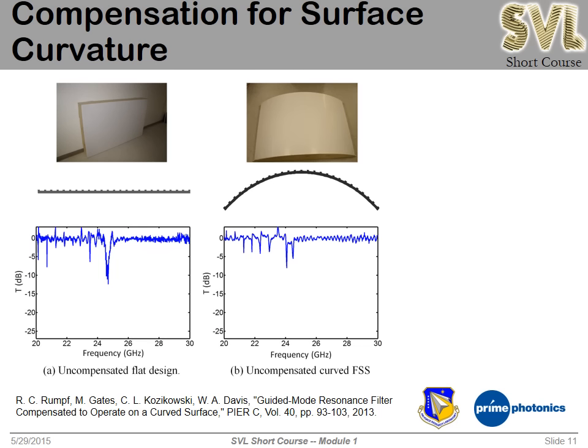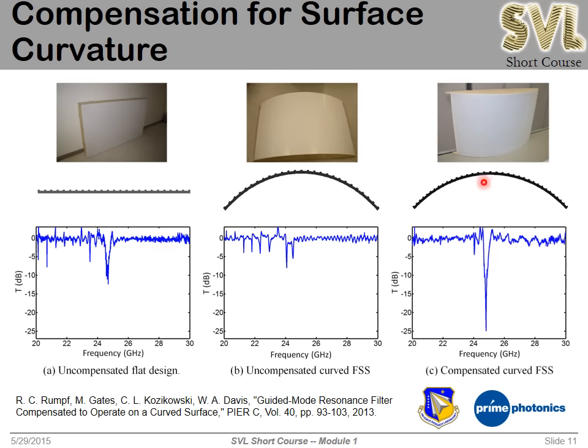What we can do to compensate is adjust the period of the grating over the curve to keep it resonant at the same frequency the entire time. Here's a picture and photograph of the actual device, and we got a very strong resonance — in fact stronger than the flat design. The reason it was stronger is that while compensating for curvature of the device, we also compensated for the curvature of the source. With about 25 feet between the transmitting horn and the device the wavefront wasn't perfectly planar, so we compensated for both simultaneously and got amazing performance.